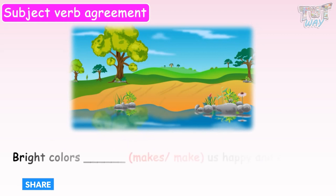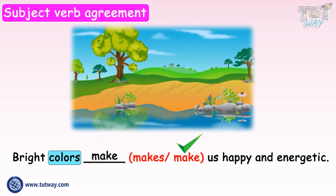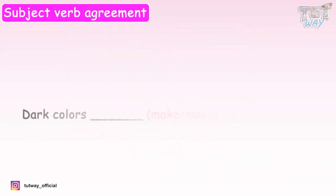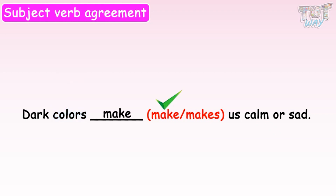Bright colors dash us happy and energetic — makes or make? It should be make, because bright colors is plural. Dark colors dash us calm or sad — make or makes? Colors is plural, so it should be make. Dark colors make us calm or sad.